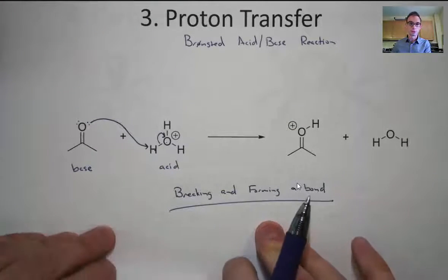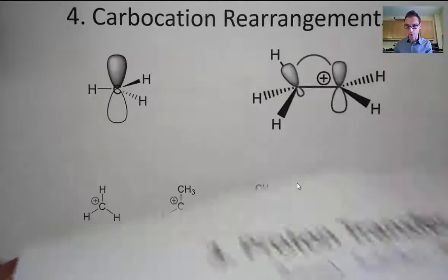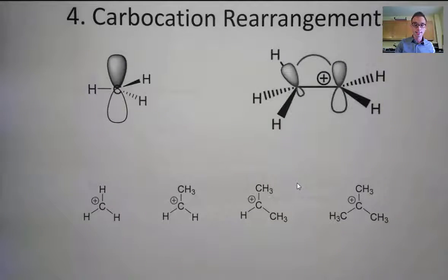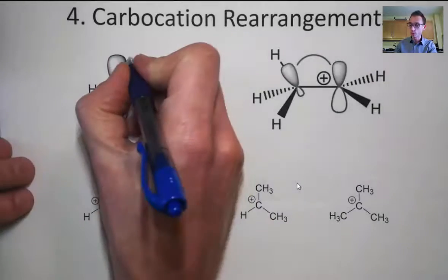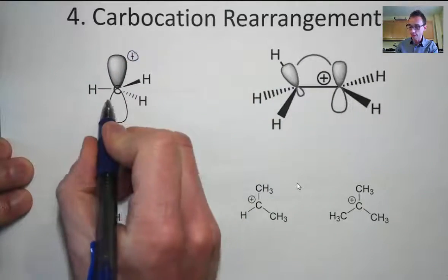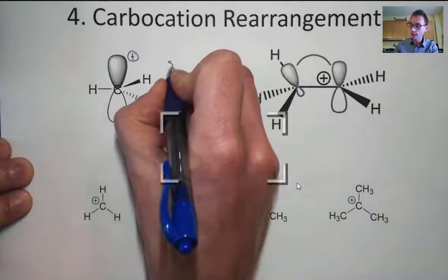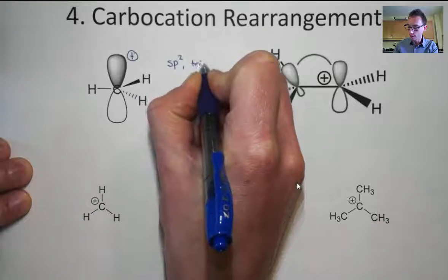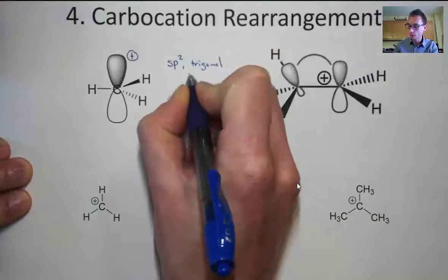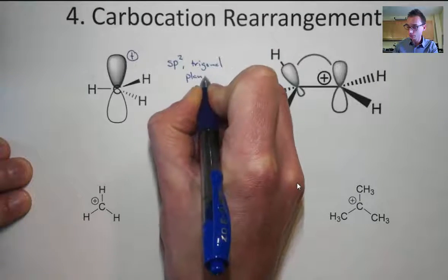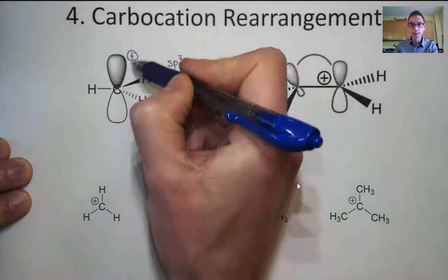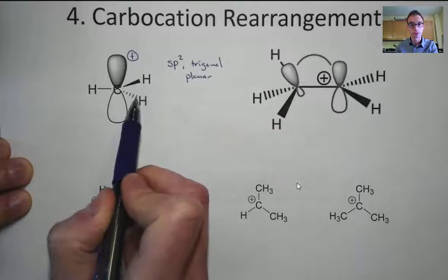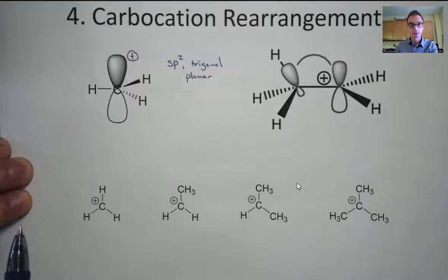Those three patterns we've already seen before in some form — they're fairly simple. The last one is a little more complicated: it's called a carbocation rearrangement. This is a carbocation, and if you recall, carbocations are sp2 hybridized and therefore the geometry is trigonal planar. The positive charge resides in the leftover p orbital, with the sp2 hybridized orbitals arranged around it.